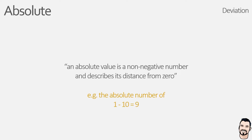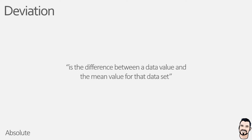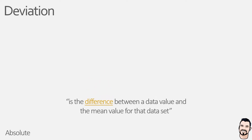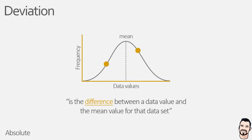Now that we know what an absolute number is, we can understand what the mean absolute deviation of a data set is. On a basic level, deviation describes the difference between an individual data value and the mean value of the data set. Visualizing this, we can see two data points and the deviation is the numerical difference between the data value and the mean value. We don't care if this deviation is below or above the mean — just that there is a deviation in the data.